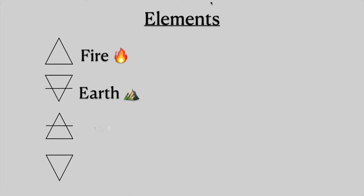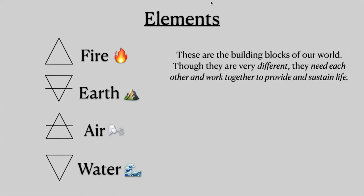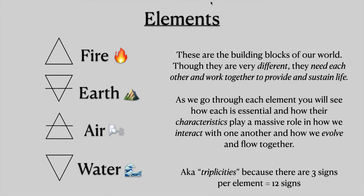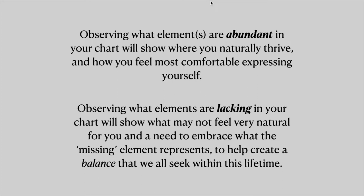So here are the four elements: fire, earth, air, and water. These are the building blocks of our world. Though they are very different, they need each other and work together to provide and sustain life. As we go through each element, you will see how each is essential and how their characteristics play a massive role in how we interact with one another and how we evolve and flow together. These are also known as triplicities because there are three signs per element. Observing what elements are abundant in your chart will show you where you naturally thrive, and observing what elements are lacking will show what may not feel very natural and a need to embrace whatever the missing element represents to create balance.